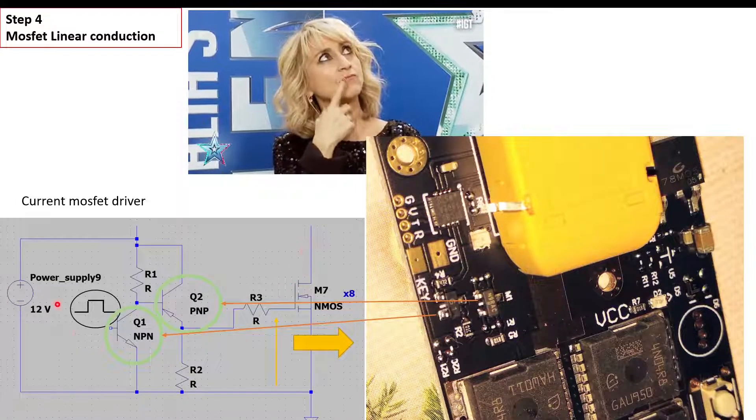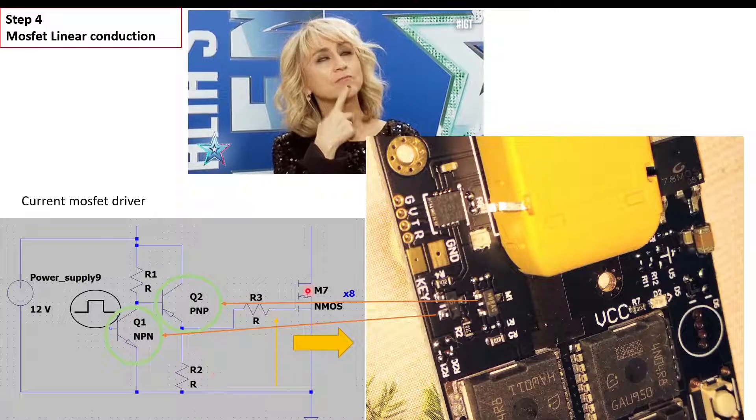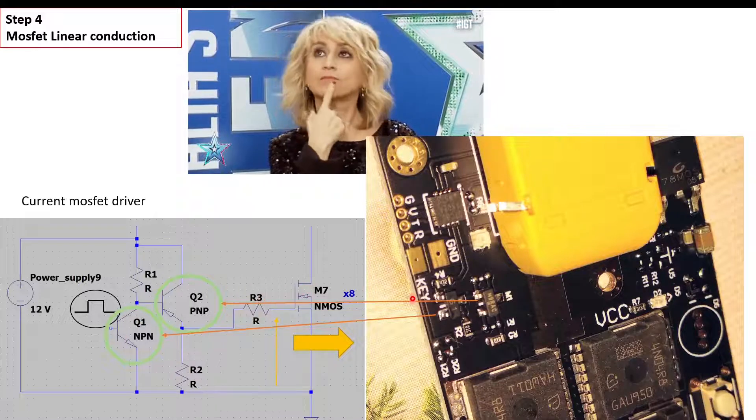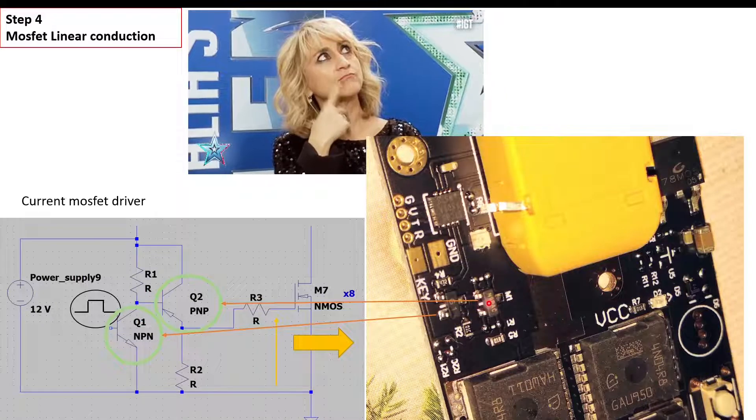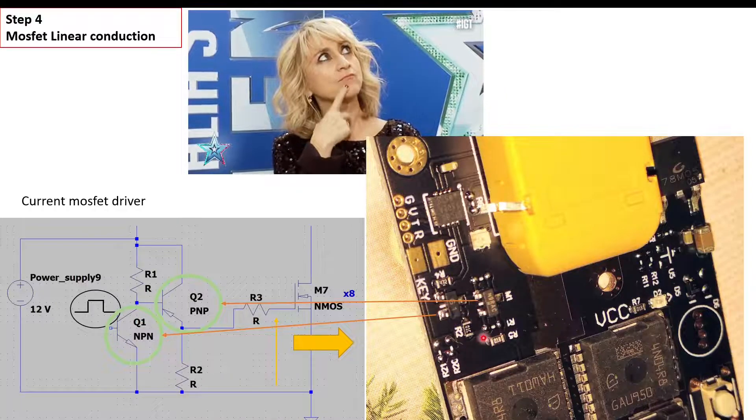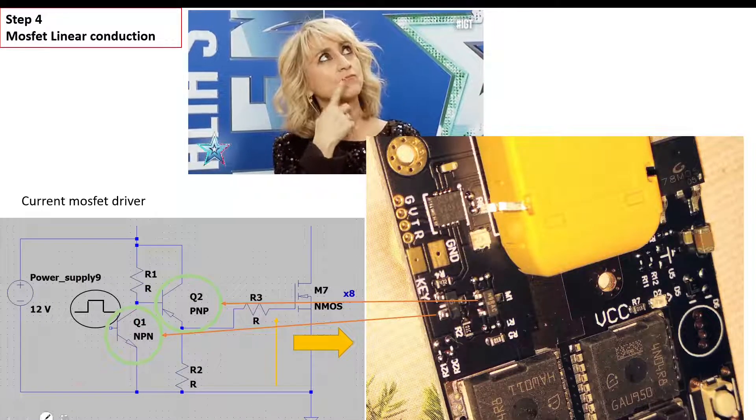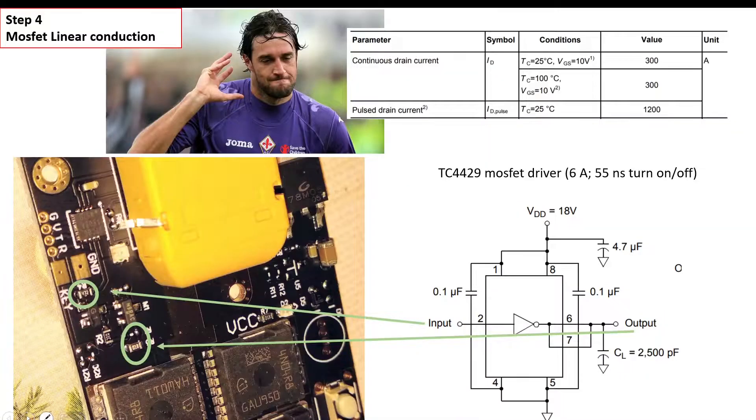We need to modify this network. How? Taking off both the transistors, both the resistances, and replacing them with a very good MOSFET driver. The TC4429 is the best choice in my opinion because it can deliver more than 6 amps.